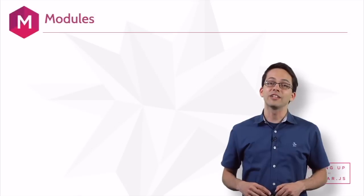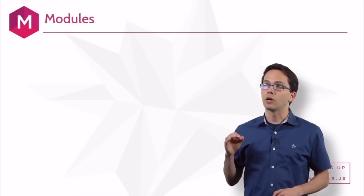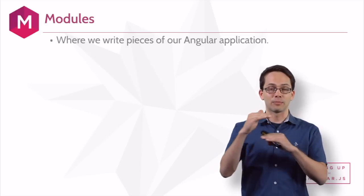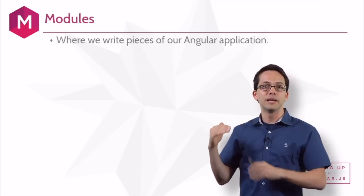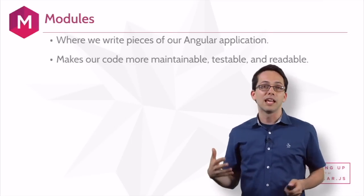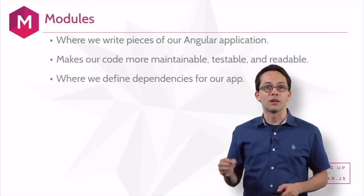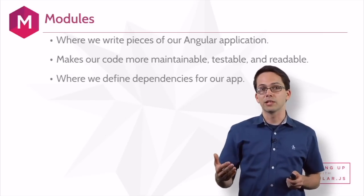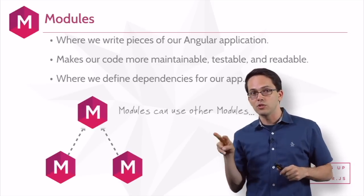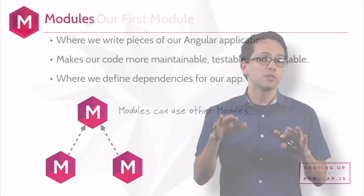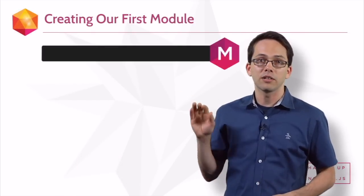The next component of our Angular application that we need to learn about is modules. Modules are where we write pieces of our Angular application — it's how we keep our code encapsulated. Because of this, it makes our code more maintainable, more readable, and more testable. Also, it's where we define all of the dependencies for our application, because we might run one module and tell our code that this module depends on these two modules. So it shouldn't surprise you that the very first piece of code you write in Angular is a module line.